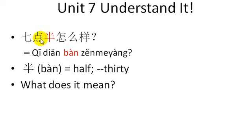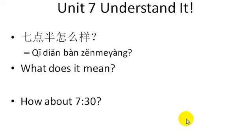So, pause if you want and take a look at this sentence and try and put it into a good English sentence. And if you came up with how about 7.30, you were correct. 七点半, 怎么样? 七点半, 7.30, 怎么样? How does that sound? Or how about?